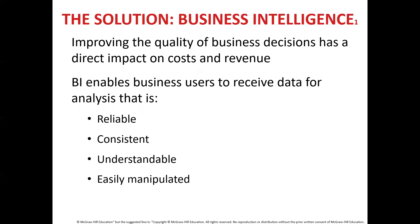Examples of using business intelligence to make informed decisions include: in retail and sales, predicting sales; in banking, forecasting levels of bad loans; in operations management, predicting machinery failures; in brokerage and security trading, predicting when bond prices will change; and in insurance, forecasting claim amounts and medical coverage costs.